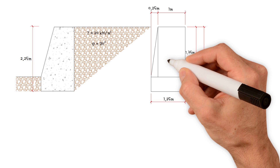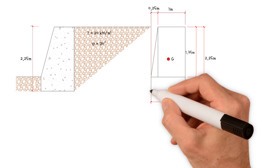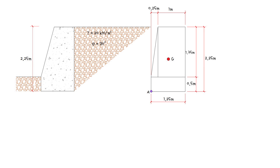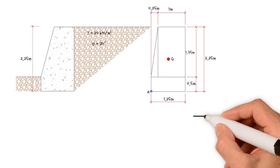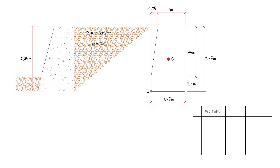The first step is to locate the position of G, the center of gravity of the wall. In all the subsequent calculations, we shall consider a unit length of wall — in other words, 1 meter width of the wall. We need to take our moments around this point, let's label it A. To make things easier, we will build a table to help us record our findings.